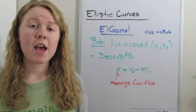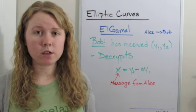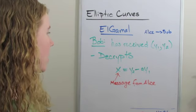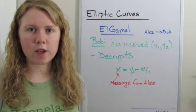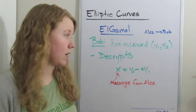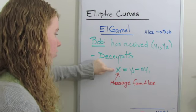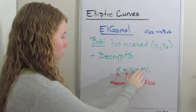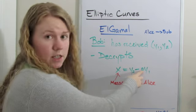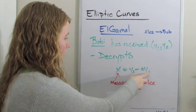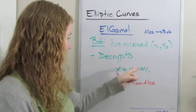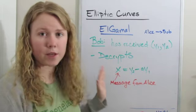So now Bob has received the message, which is y₁ comma y₂. And now he has to decrypt to get the original message that Alice sent him. He does this using this formula right here, where x is the message from Alice, and it equals y₂ minus a, remember that's his secret key, times y₁. And once Bob has done this computation here, he will have the original message from Alice.